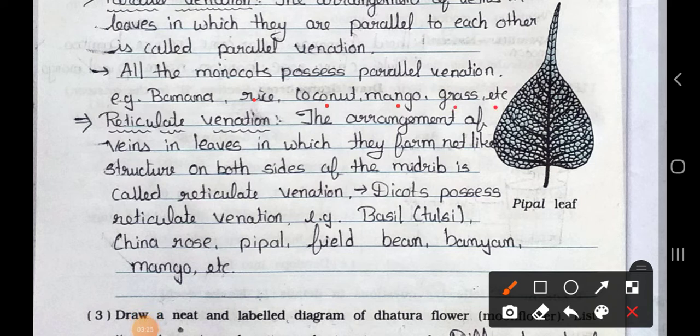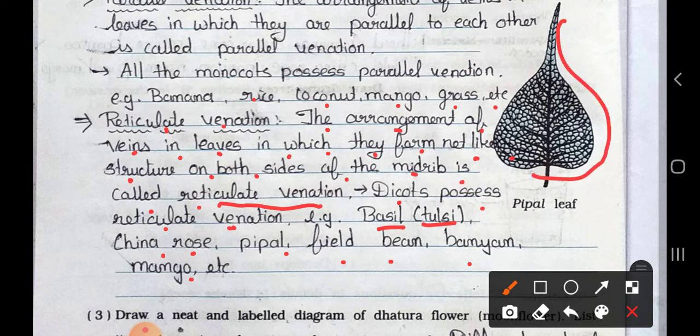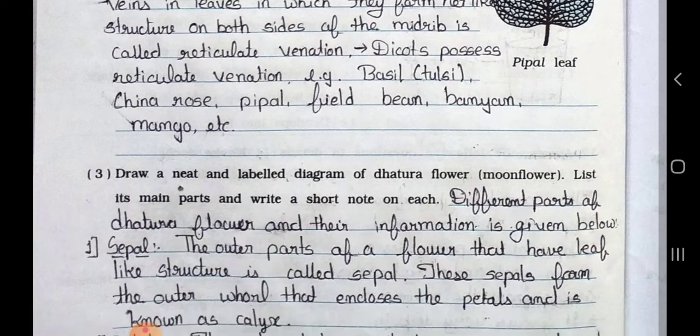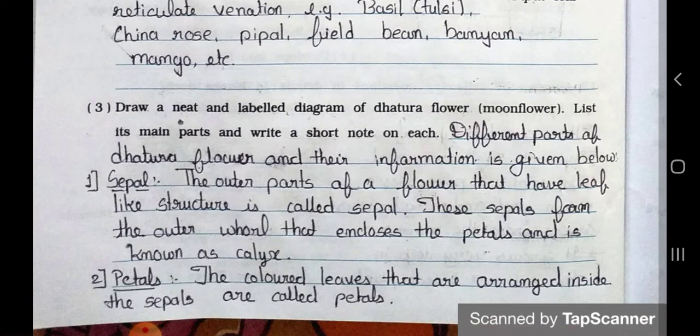Now next one is reticulate venation. The arrangement of veins in leaves in which they form net-like structure on both sides of the midrib is called reticulate venation. Dicot plants possess reticulate venation. Example, basil means tulsi, china rose, peepul, field bean, banyan, mango, etc. Here you see the peepul leaf is given.